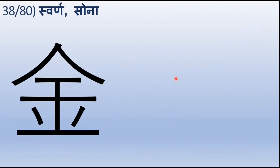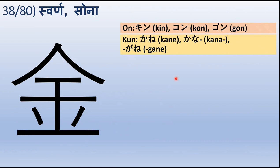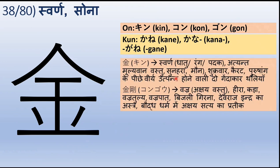Aaj tiswa kanji — svarna ya sona. Onyomi mein kehenge Kin, ya Kon ya Gon, aur kunyomi mein Kaane, Kana. Aur kisi kisi shabd mein Gaane ka bhi prayog aa sakta hai. Kin ka arth hai svarna ya svarna dhatu, svarna rang yaani sunehera rang, ya phir svarna padak yaani gold medal, atyant mullevan vastu, sunehera. Aur sunehera — jaise hum angrezee mein kahavat hai ki if speech is silver then silence is golden — to is tarah se silence yaani moun ko bhi ye darsha sakta hai.